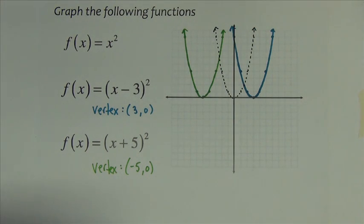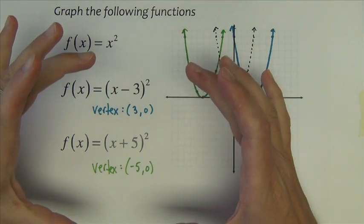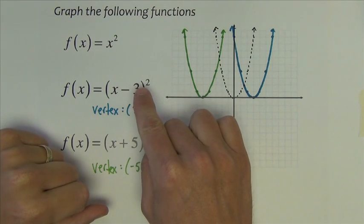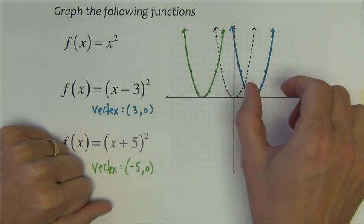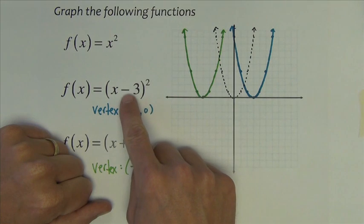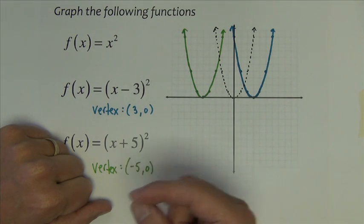So to summarize, adding and subtracting numbers inside the power, inside the parentheses, have the effect of just simply sliding the graph left and right. Minus numbers go to the right, adding numbers go to the left.